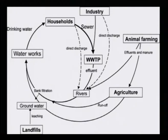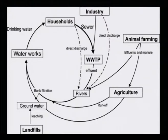Looking at this particular slide, we can see how household water through the sewer goes to the wastewater treatment plant and is then run into the rivers. The waterworks are supposed to purify and supply drinking water — that is what the water cycle looks like. Then there are industries which make direct, untreated discharge into rivers, and we have seen this example in river Ganga.